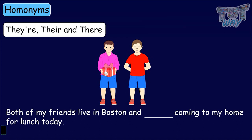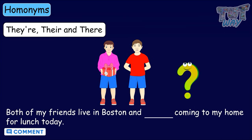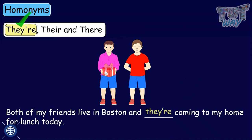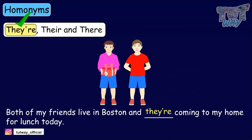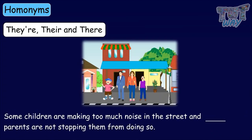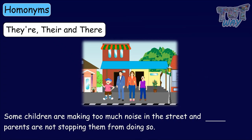Both of my friends live in Boston, and they're coming to my home for lunch today. Another example: Some children are making too much noise in the street, and their parents are not stopping them from doing so. The homonym their can be used here, as it means belongs to them.